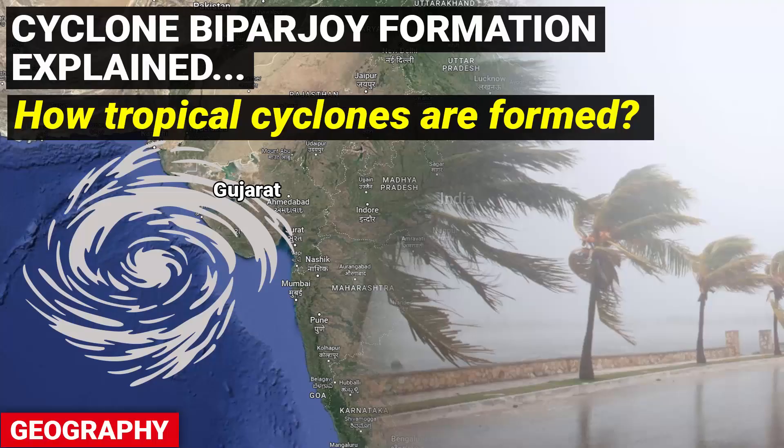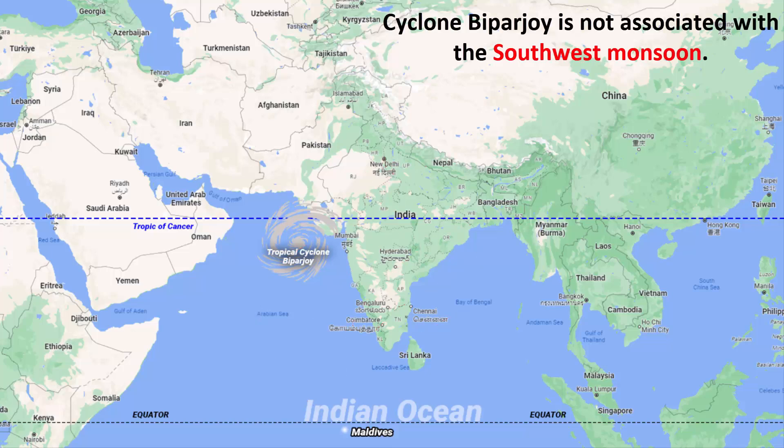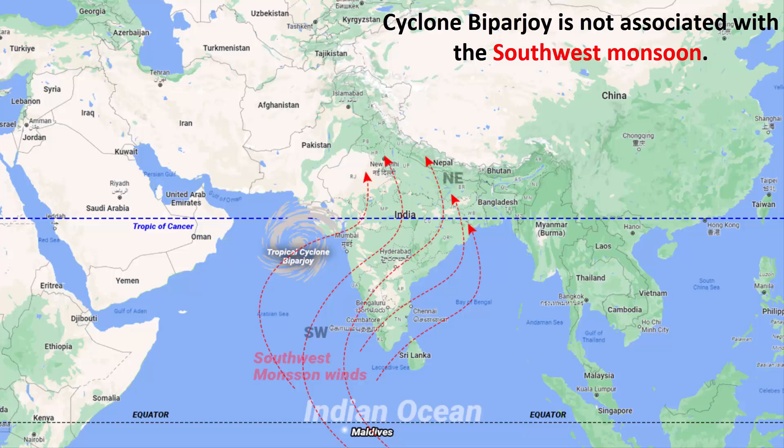Now let's go to the main topic of this video: how did this cyclone originate? Before we start, it is important to clarify that cyclone Biporjoy is not associated with the southwest monsoon. This distinction is crucial because the southwest monsoon typically occurs around this time of the year, which may lead to confusion between the monsoon and cyclone Biporjoy. The southwest monsoon is a seasonal wind that blows from the southwest to the northeast across the Indian subcontinent.